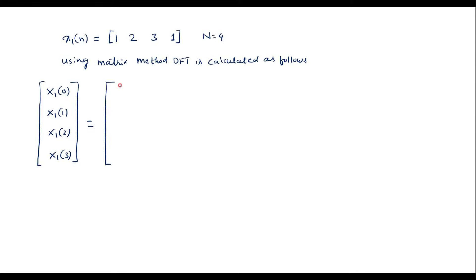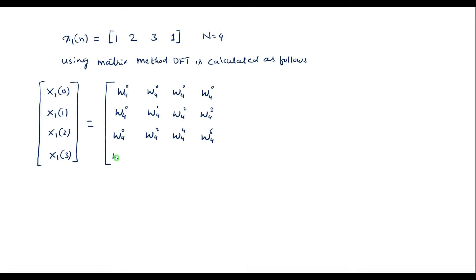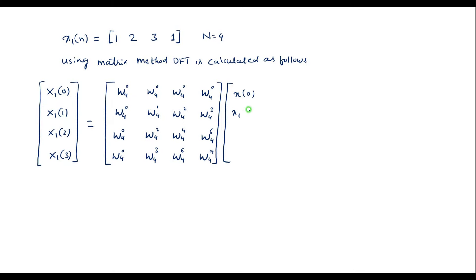The twiddle matrix has first row: W4^0, W4^0, W4^0, W4^0. Second row: W4^0, W4^1, W4^2, W4^3. Third row: W4^0, W4^2, W4^4, W4^6. Last row: W4^0, W4^3, W4^6, W4^9. This is the N×N, that is 4×4, twiddle factor matrix. Then we write the input matrix x1 of n with entries x1 of 0, x1 of 1, x1 of 2, x1 of 3.